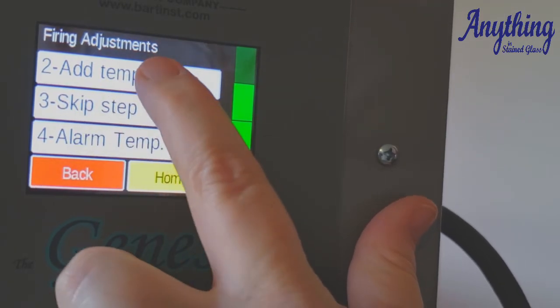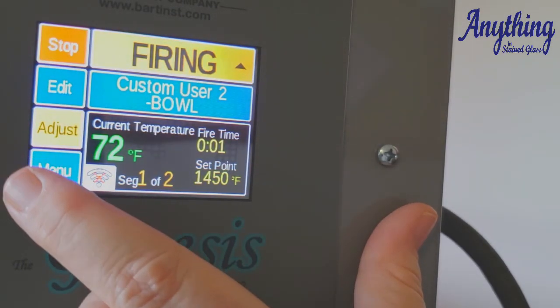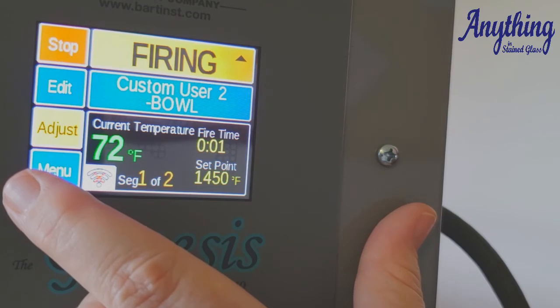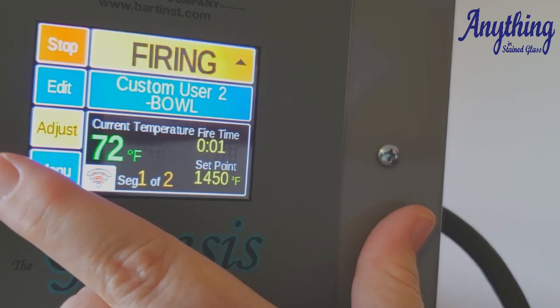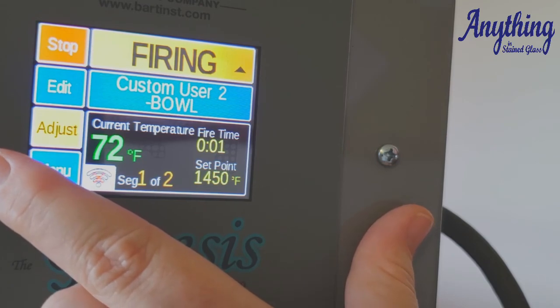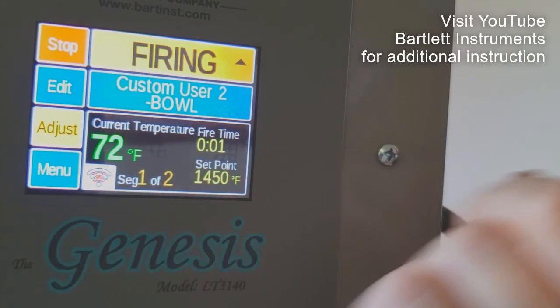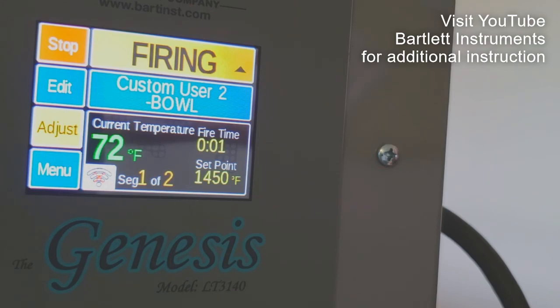If you need to add temperature, again, to the current firing, it adds it in 5-degree segments. If you need to add hold time, again, 5-minute increments. So those are the basic features of the Genesis Controller. So if you have any other questions, you're always welcome to give us a call here at Olympic Kilns.